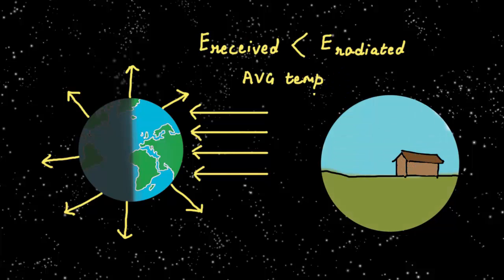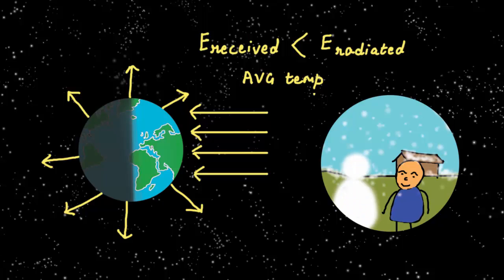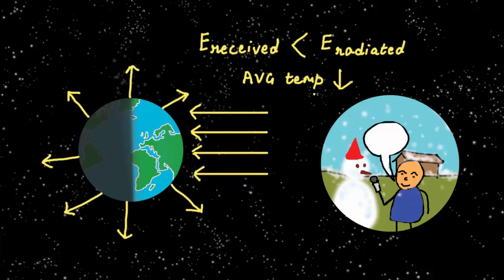If more energy is lost than is gained, we get cooler and enjoy our winters. So, what causes this amount of energy reaching a location to change throughout the year which causes seasons?